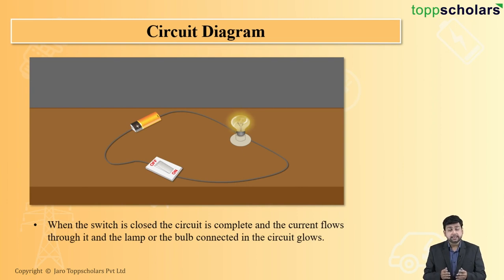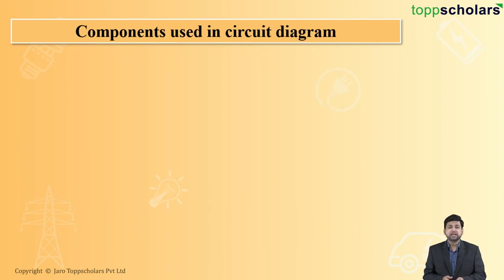So when the switch is closed, the circuit gets complete. And when the switch is open, the circuit is incomplete. If the circuit is complete, the bulb glows. And if the circuit is incomplete, the bulb turns off. So now let's talk about the components used in a circuit diagram.